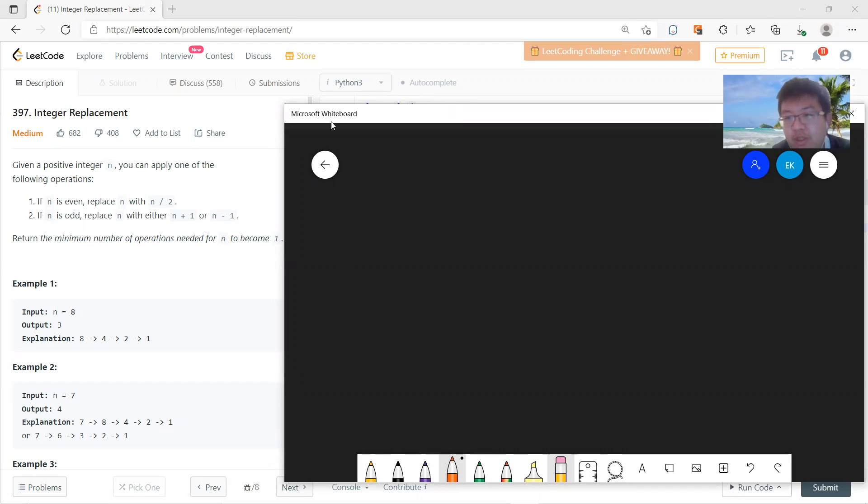Okay, so that means if n is even, the only way you can do is divide it by 2. If n is odd, then you have two ways: plus 1 or minus 1.